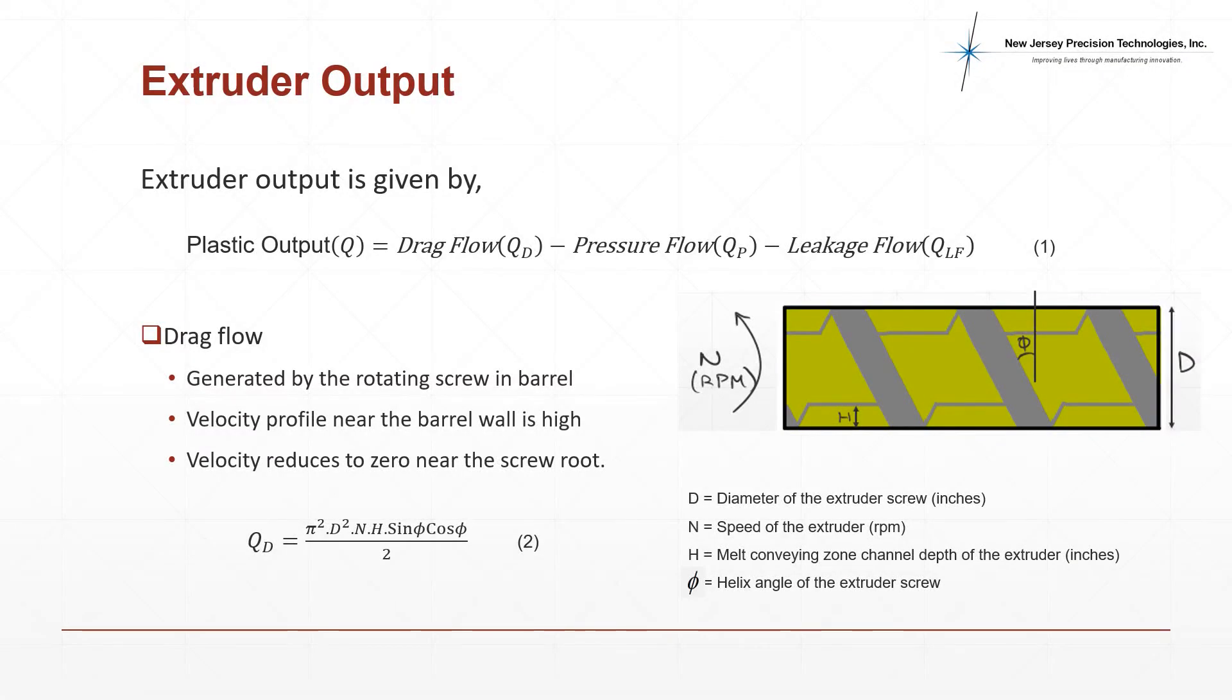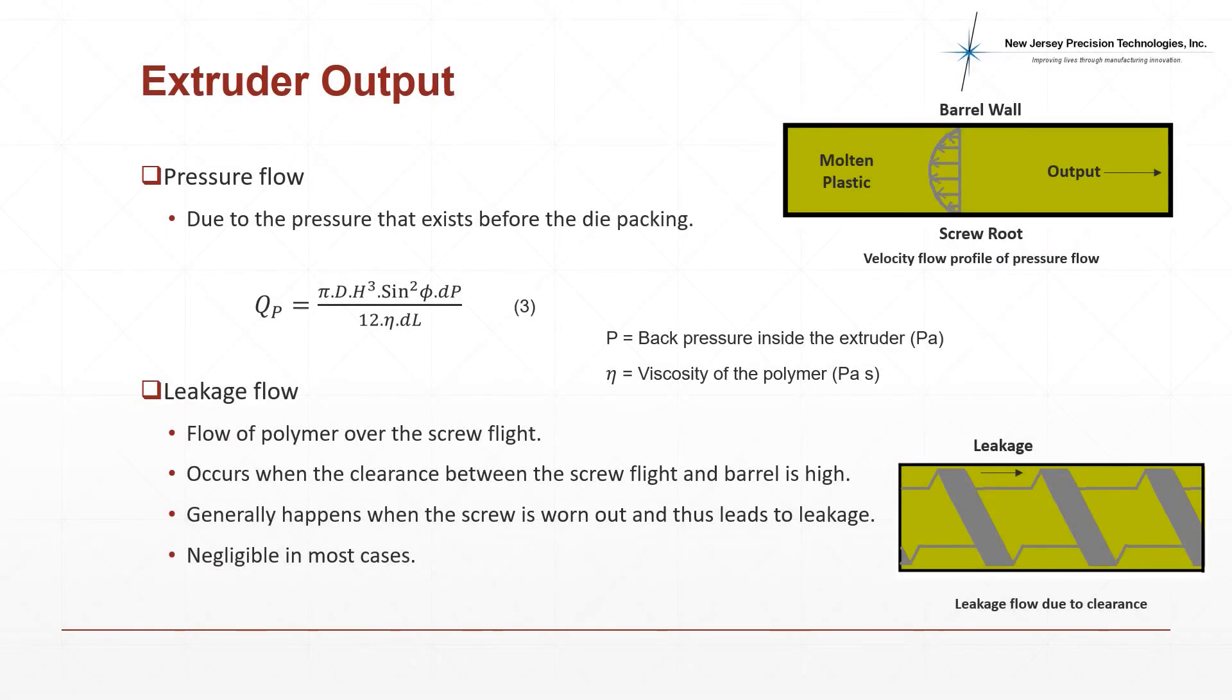Extruder throughput can be determined using equation 1: plastic output equals drag flow minus pressure flow minus leakage flow. Drag flow is generated by the rotating screw inside the barrel. The velocity profile developed has a parabolic shape with maximum velocity at the barrel wall and zero velocity at the screw root. The throughput due to drag flow can be calculated using equation 2. Pressure flow throughput is due to the die packing and depends on the viscosity of the polymer and volumetric flow. It is calculated using equation 3.